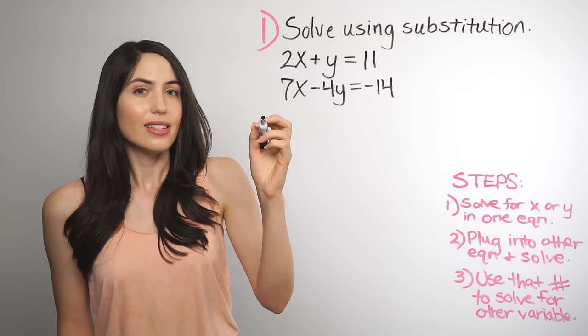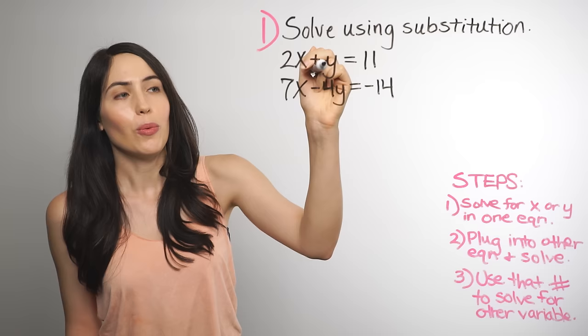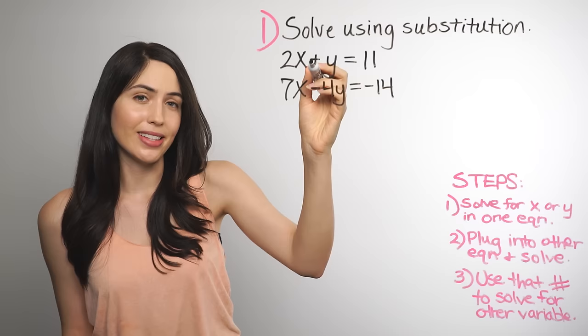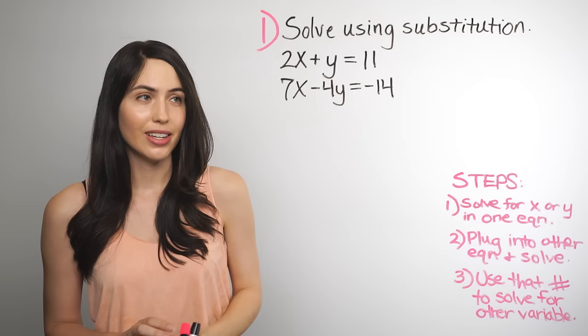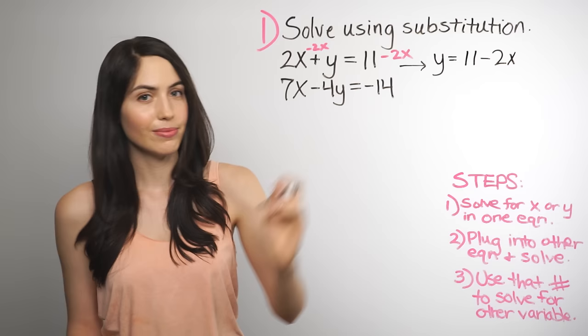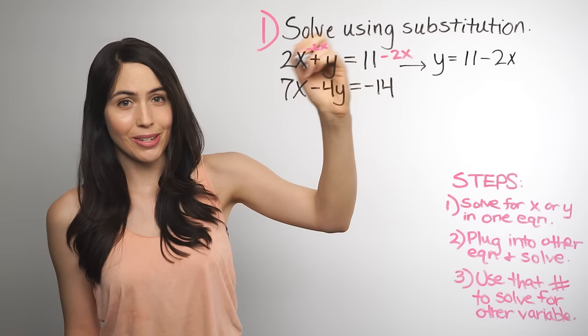Since right now there is a 2x added to the y, if we want to get y completely alone on the left side, we need to do the opposite of this addition and subtract 2x from both sides to move it to the right side. So when we subtract 2x from both sides, it cancels over here, and you just have y equals 11 minus 2x.